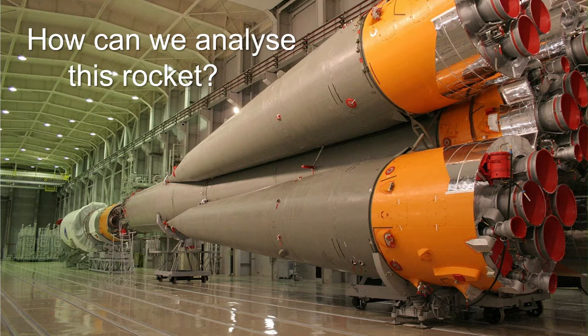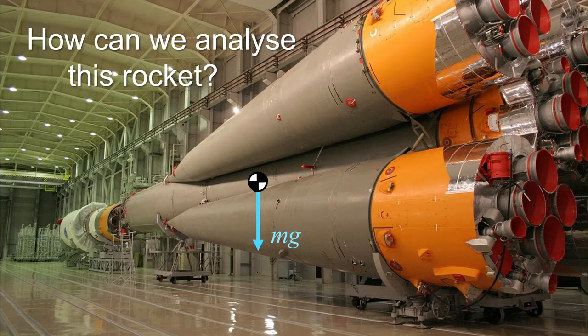If we think of the forces acting on the rocket, it is clear that the mass of the rocket will exert a gravitational body force, mg. But I cannot see any other forces acting on the structure in this image. That is because all the other forces are effectively internal forces within the image, and thus consist of equal but opposite action-reaction pairs.